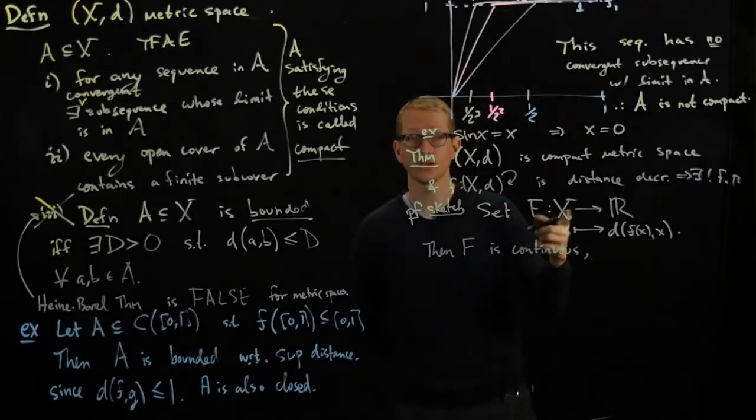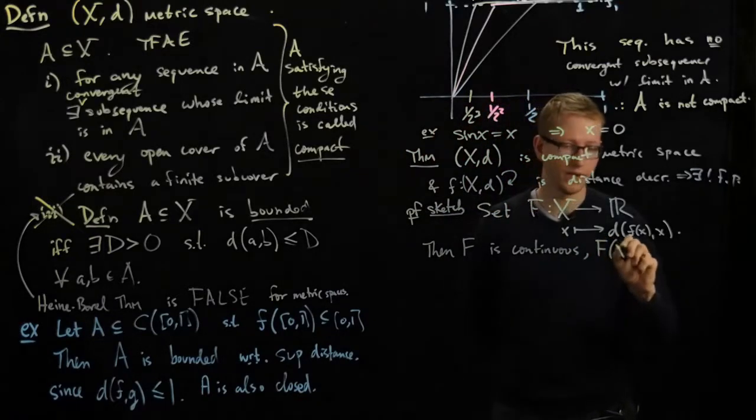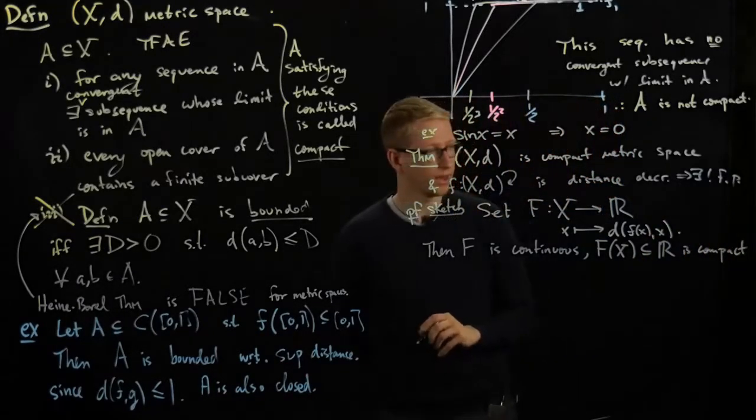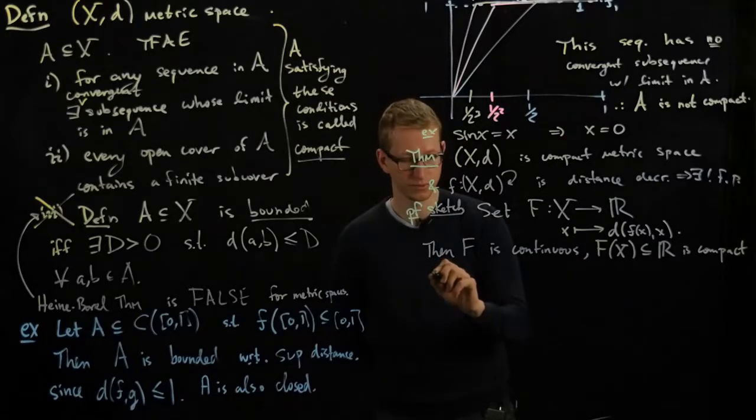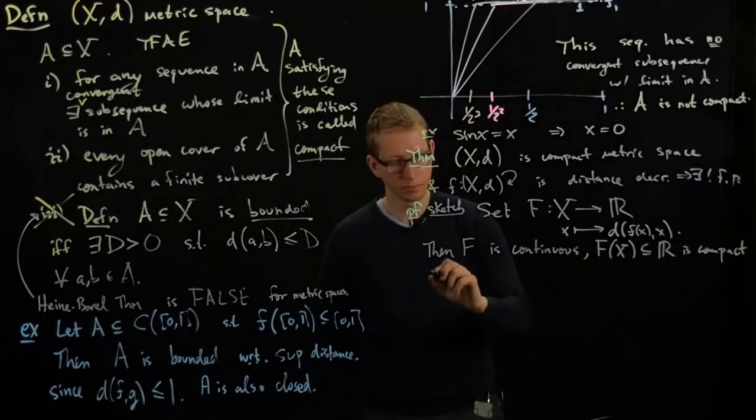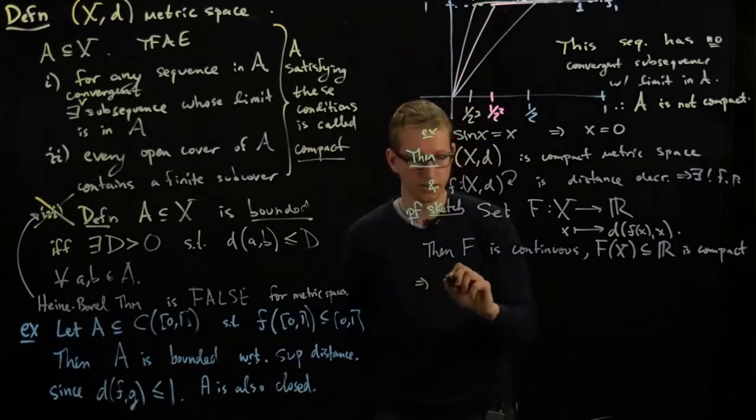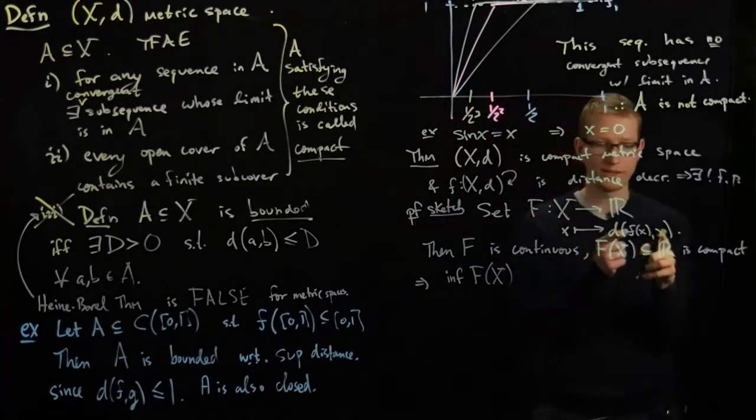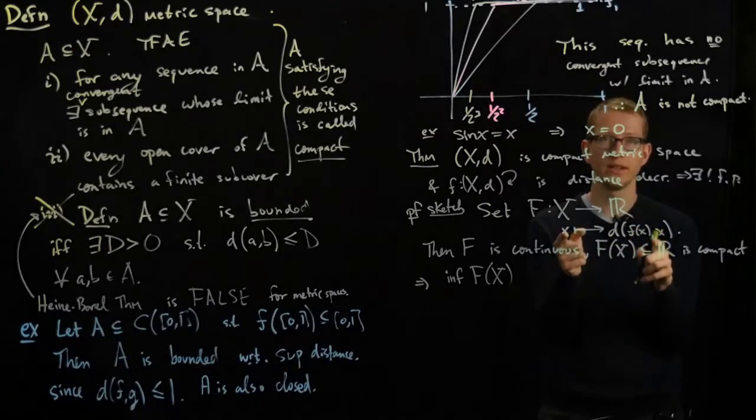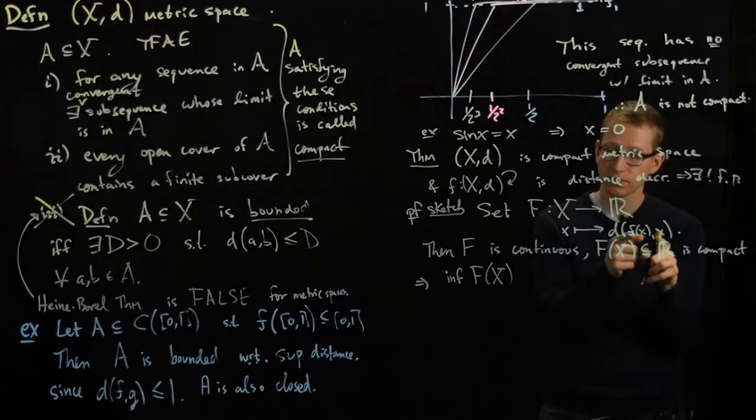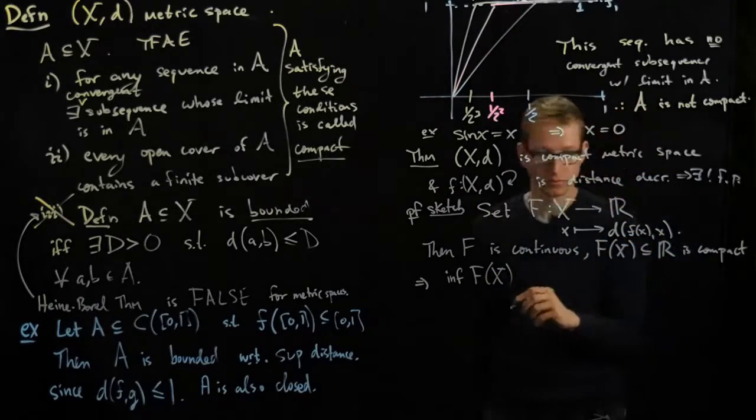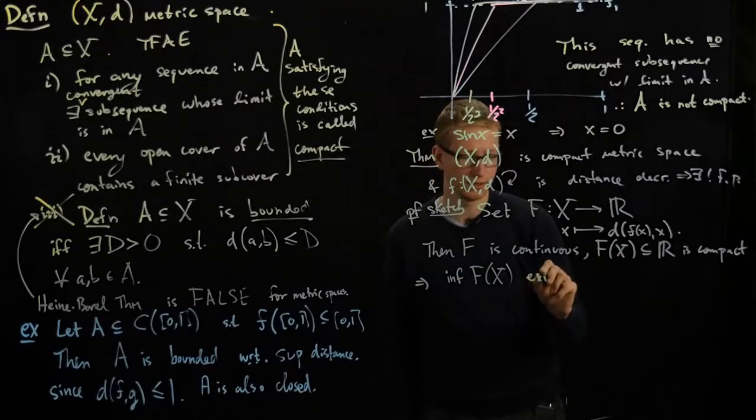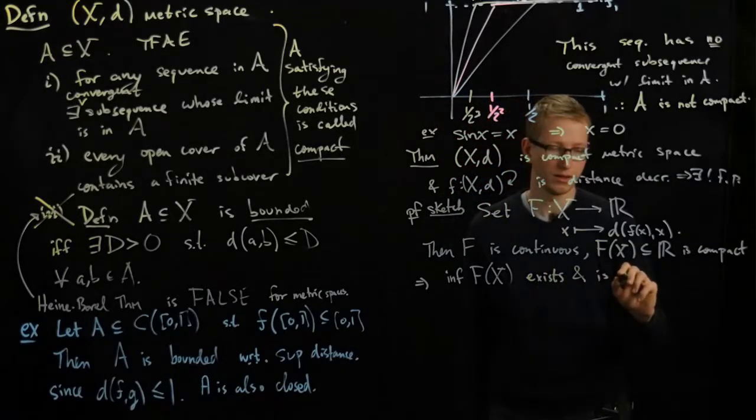And because f is a continuous function on a compact space, f of x as a subset of R is compact. And it's bounded from below, well I mean it's already compact so we know it's bounded from below, but not only that, the infimum of f of x, and if you look at the infimum what it's saying is when is the distance between any point in x and f of x as close as possible, so the infimum of f of x exists and is an element.